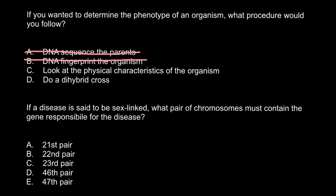A dihybrid cross is when we have two genes in heterozygous state — for example, gene A (capital A, small a) and gene B (capital B, small b) — and we cross with another organism that has the same genetic makeup, also heterozygous for both genes A and B. This is called a dihybrid cross, and it wouldn't help us determine the physical characteristics or how the organism looks.